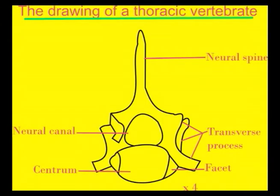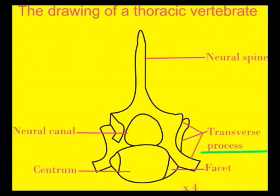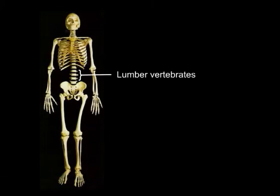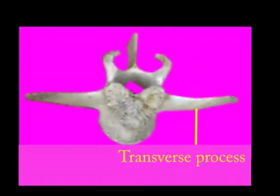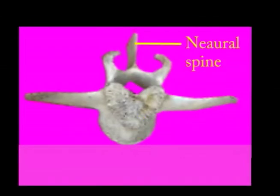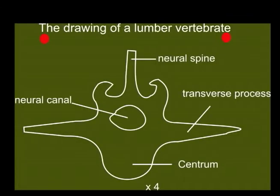A drawing of the thoracic vertebrae — label neural spine, transverse process, facets, neural canal, and centrum. Then put a magnification. Lumbar vertebrae: the prominent feature is the long, prominent transverse process. Other parts include a large centrum, neural canal, and neural spine. A drawing of lumbar vertebrae — label neural spine, transverse process, neural canal, centrum, and the port. Then put a magnification.